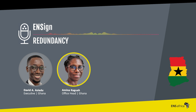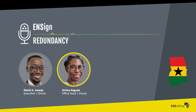The key difference between mutual separation and redundancy is that in a mutual separation, the employer is free to hire a new employee to replace the one who has exited. Whereas in a redundancy, because the employer laid off the employee due to having more employees than needed, the employer cannot hire new employees to replace those who were laid off as a result of redundancy.